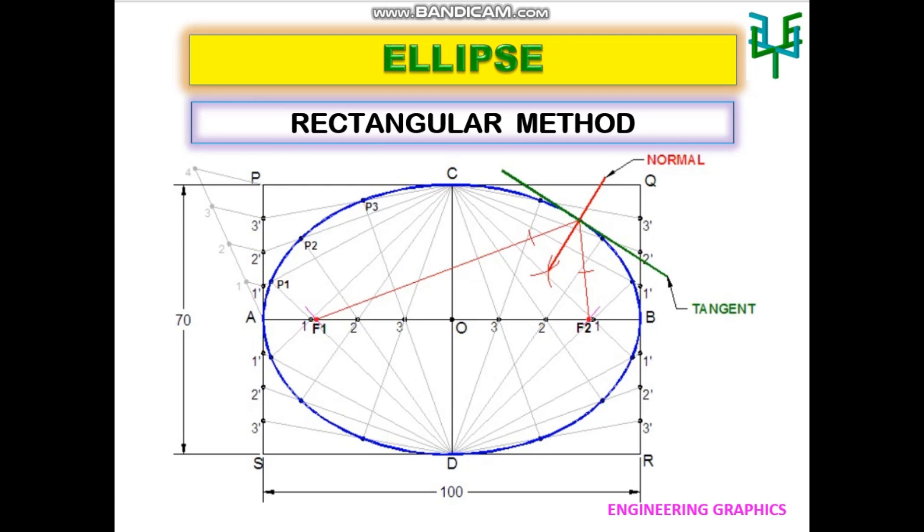This video explains the construction procedure of an ellipse by rectangular method. Rectangular method is also known as oblong method. We will discuss this case with the help of a problem.